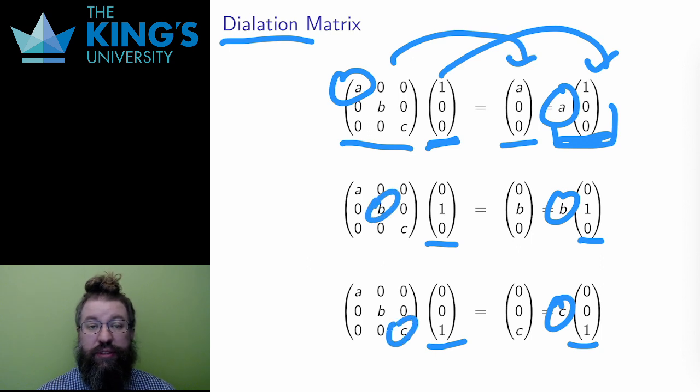For most dilations, when A, B, and C are different from each other, these are the only eigenvectors. Other vectors are stretched by different factors in their x, y, and z components, so they end up with new and different directions.